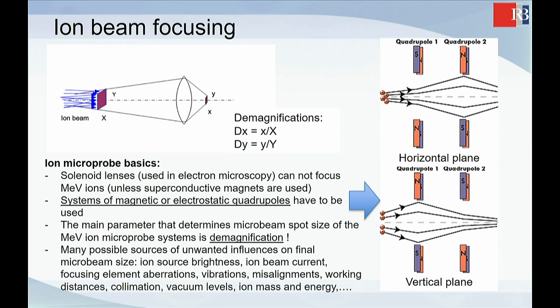Because of that, the only way or the best way to do focusing is using quadrupoles. And if you consider quadrupole, one quadrupole is actually focusing only in one dimension. So you have to have at least two quadrupoles in series, in order to get finally focused ion beam.